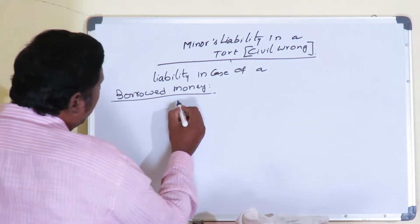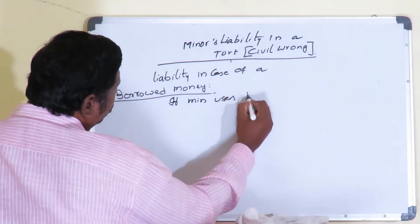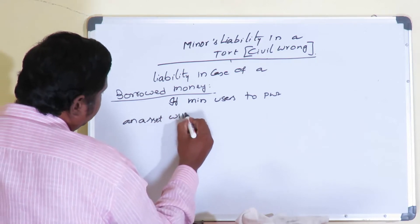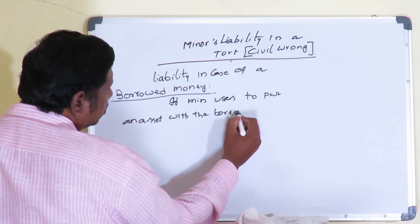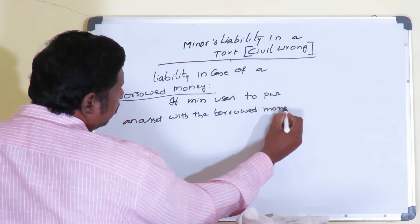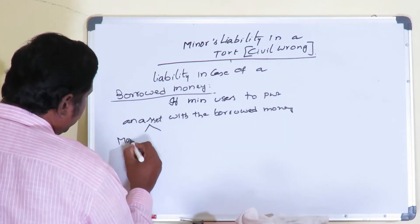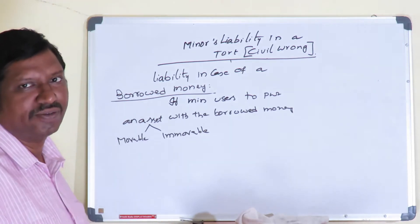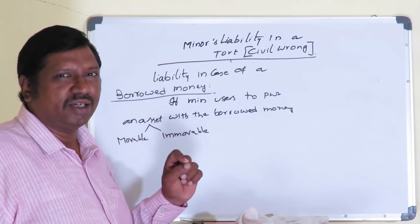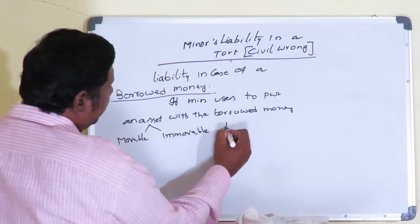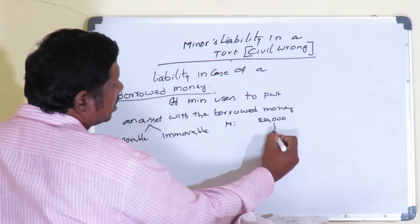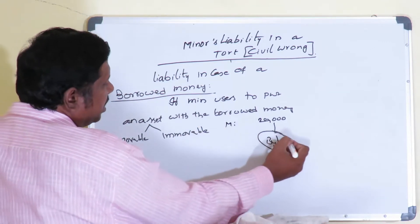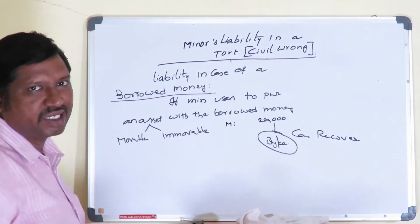What if the minor uses borrowed money to purchase an asset, whether movable or immovable? For example, the minor borrowed 20,000 rupees and used it to purchase a bike. Whether this bike is recoverable by the money lender — yes, it can be recovered.